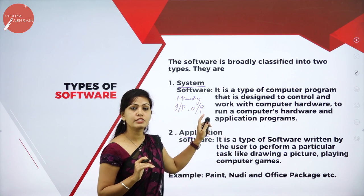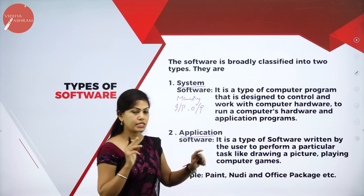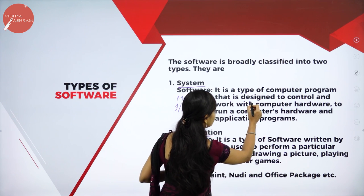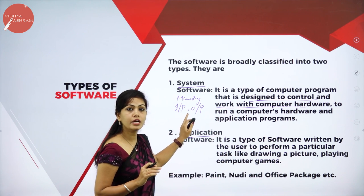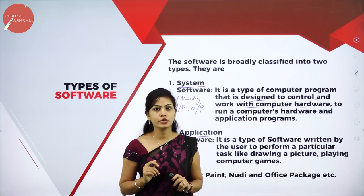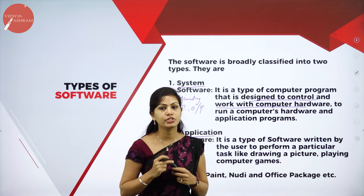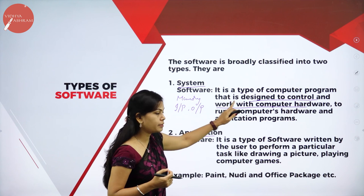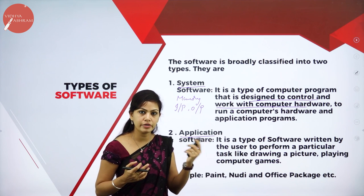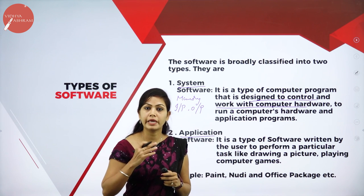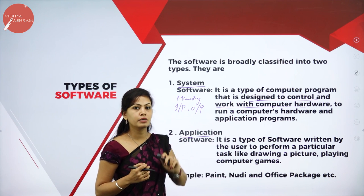System software is a type of computer program designed to control and work with computer hardware. It is used to control the hardware resources like memory and input/output units. System software is mainly used to execute the development of other application software.